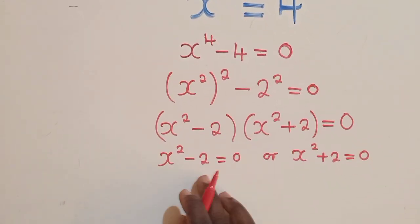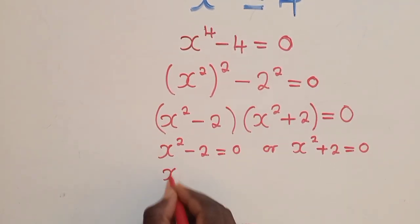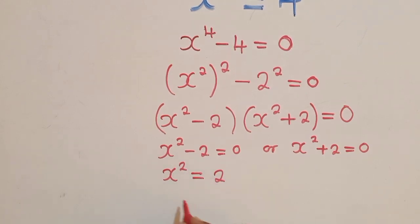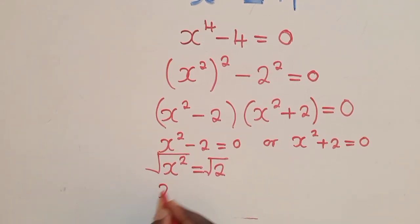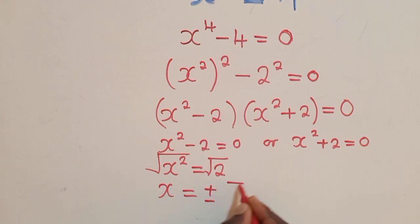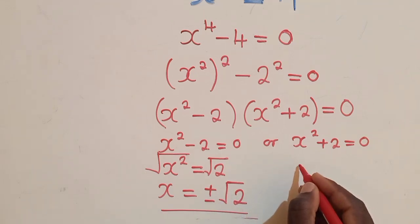So now we solve this. We can also apply difference of two squares here if you want. If you don't want, you can say x² is equal to a². You square root both sides, of which the value of x will simply be equal to positive or negative root of 2. This is the value of x, so you have two solutions here: root of 2, or negative root of 2.